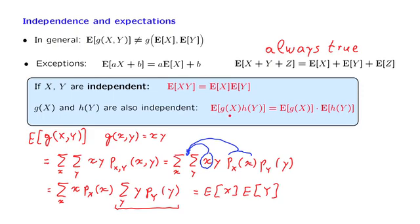That the expected value of the product of two functions of independent random variables is equal to the product of the expectations of these functions. We could also prove this property directly without relying on the intuitive argument. We could just follow the same steps as in this derivation.